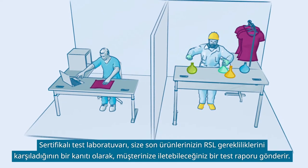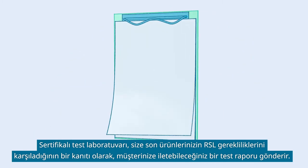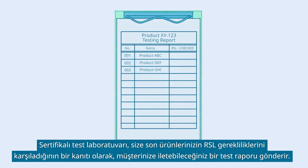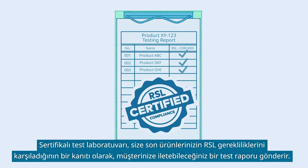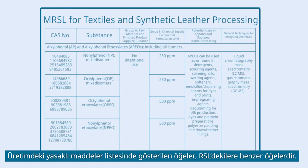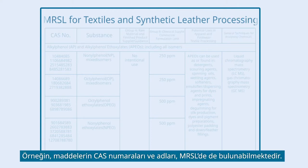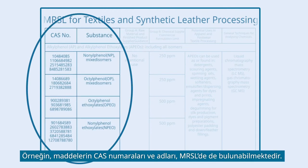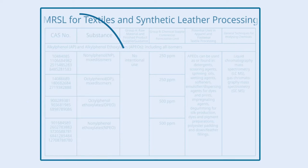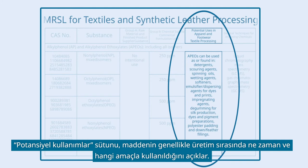The certified testing laboratory will send you a test report, which you can forward to your customer as proof that your end products fulfill the RSL requirements. The items shown in a manufacturing restricted substance list are similar to those of an RSL. For example, the CAS numbers and names of the substances can also be found in the MRSL. The column Potential Uses explains when and for what purpose the substance is commonly used during manufacturing.